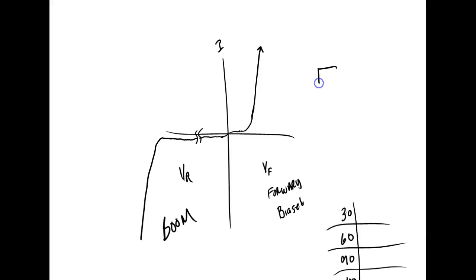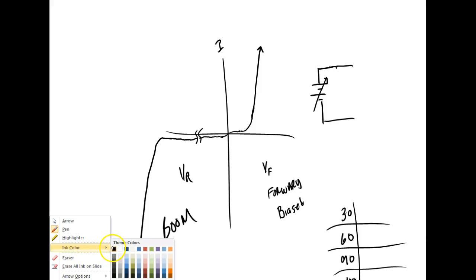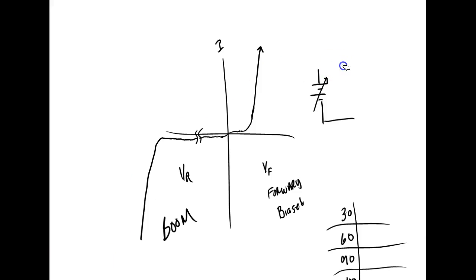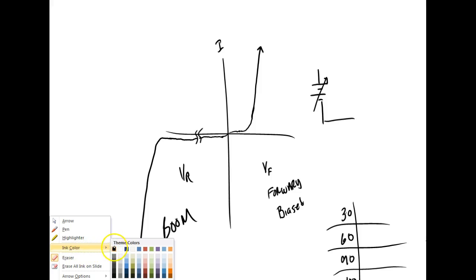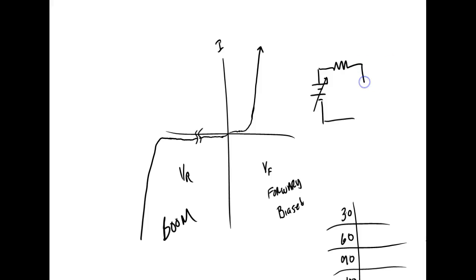The circuit we're setting up uses a variable power supply — whenever you see an arrow through an electronic symbol it means variable. Instead of using a 1 megaohm resistor, we're going to use a 10 megaohm resistor. What are the color codes for 10 megaohms? It's going to be brown, black, blue — so we're dealing with pretty close to an open circuit at 10 megaohms.